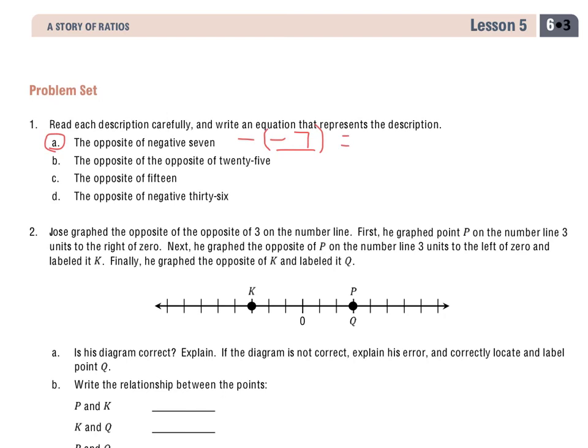What does that equal? The opposite of negative 7 is a positive 7. And I see I have two negative signs there that will kind of cancel each other out. So the opposite of negative 7 will equal 7.